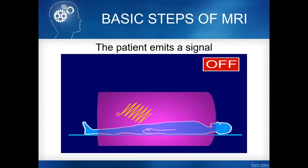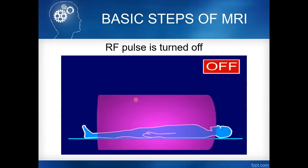The strength of the signal depends on the parameters we use: proton density, T1, and T2. These are the basic parameters used in MRI. When the RF pulse is turned off, what happens is relaxation.